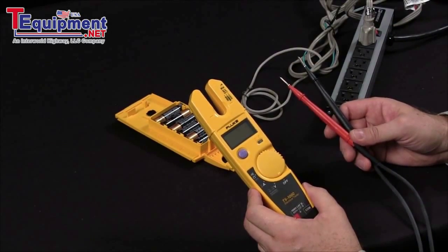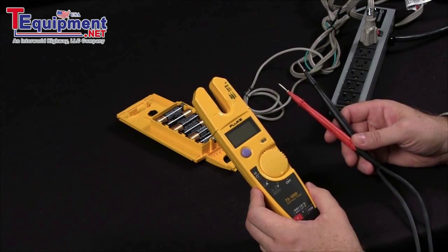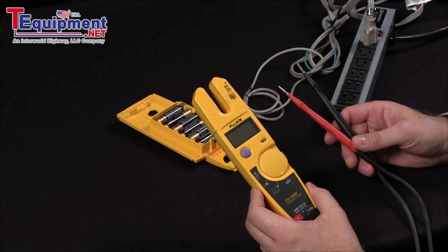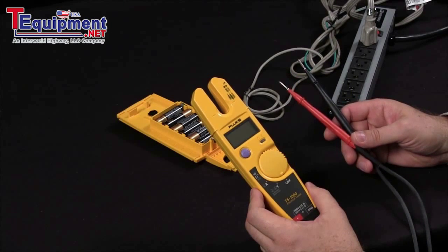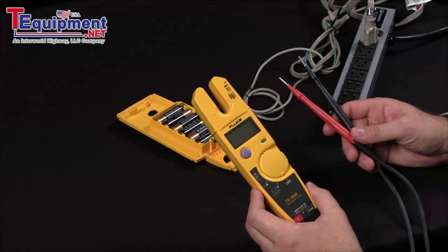Today, I will show you how to make measurements with the Fluke T5. This comes in two different styles. We have a T5 600, which measures up to 600 volts AC, and the T5 1000, which of course will measure up to 1000 volts AC.